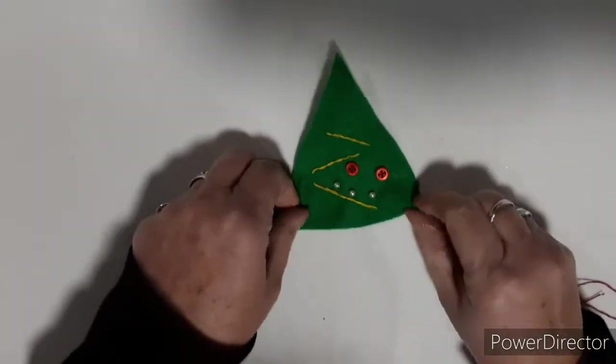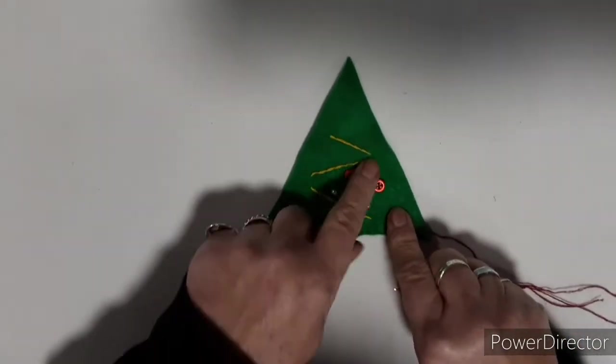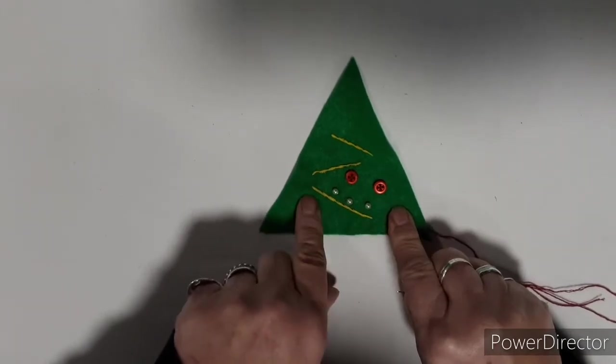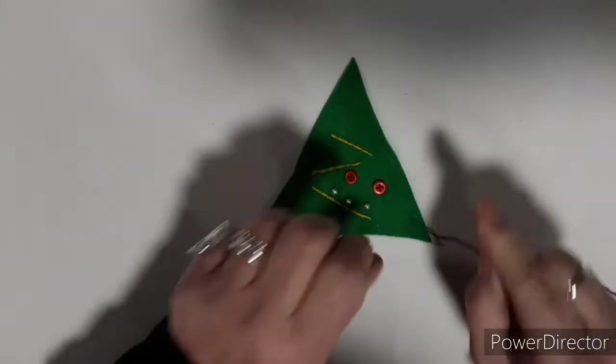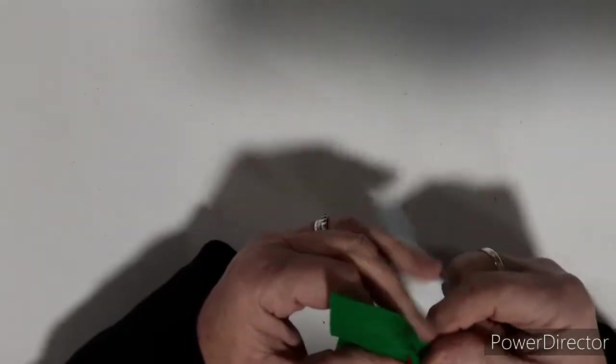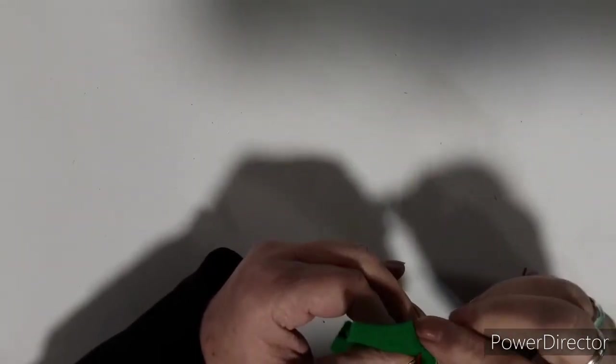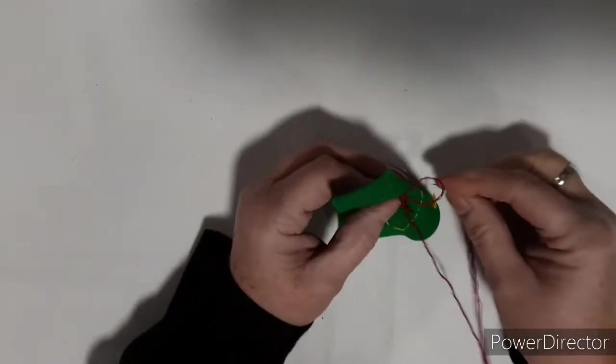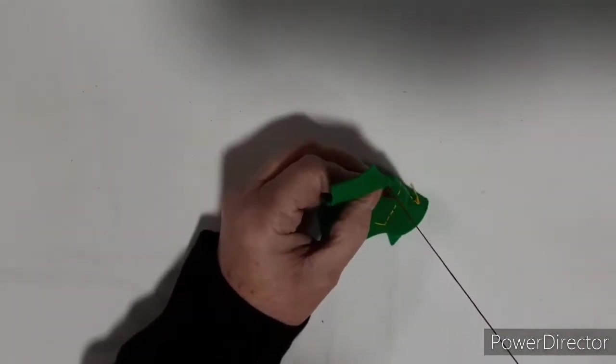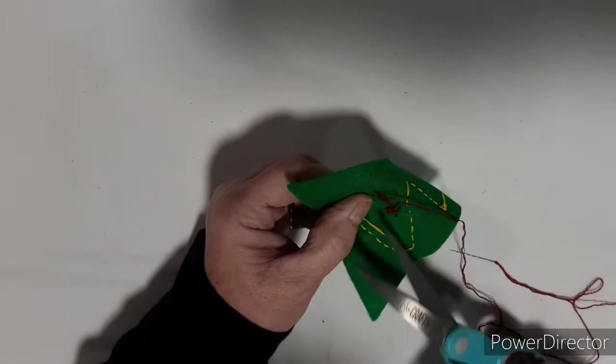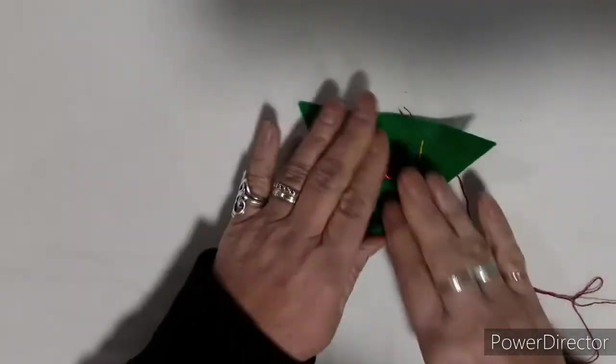And there you have it. You can go on to add as many little buttons and beads and stitches as you like really, just to give it a good decoration each time. Just make a knot, snip it off, secure it at the back.